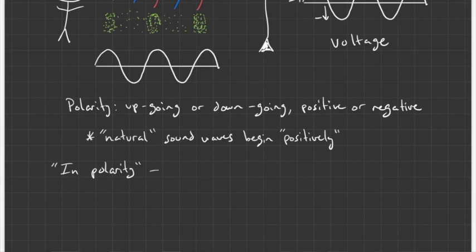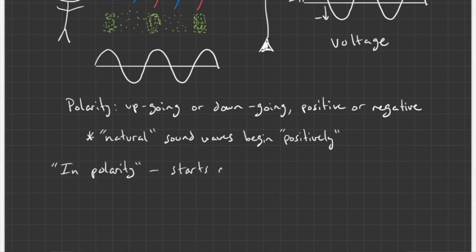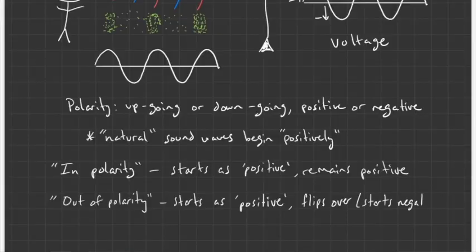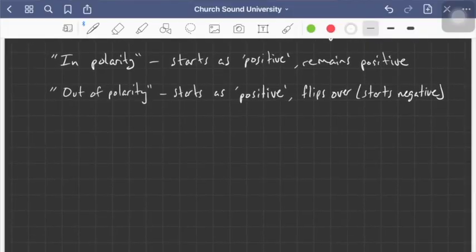Perhaps you've heard somebody say something was in polarity. When we say in polarity, we mean that if we begin with a positive moving polarity, we will end with a positive moving polarity. If we are out of polarity, we may start with a positive moving polarity and somewhere along the chain it gets flipped — then it starts negatively. Inversing the polarity is literally just taking everything going up and making it negative, and all the negatives into positive.